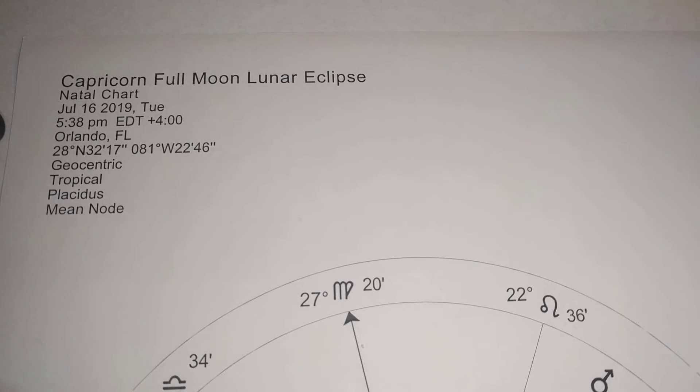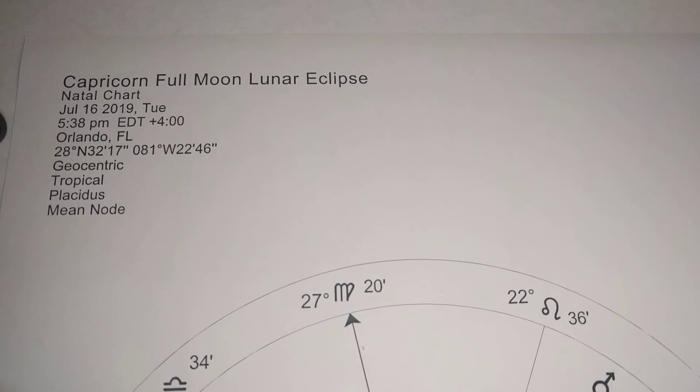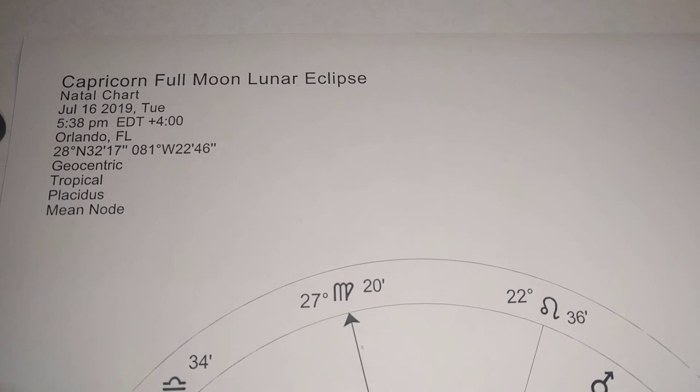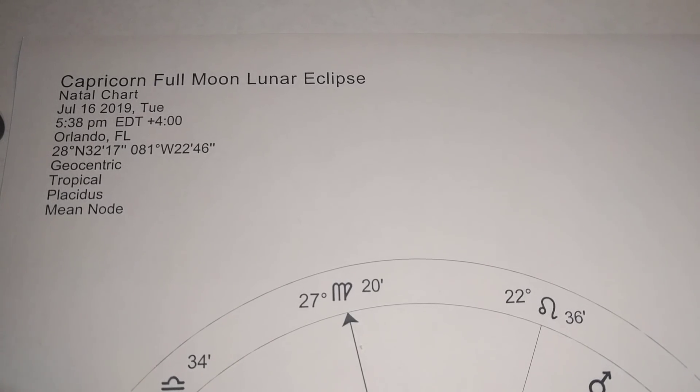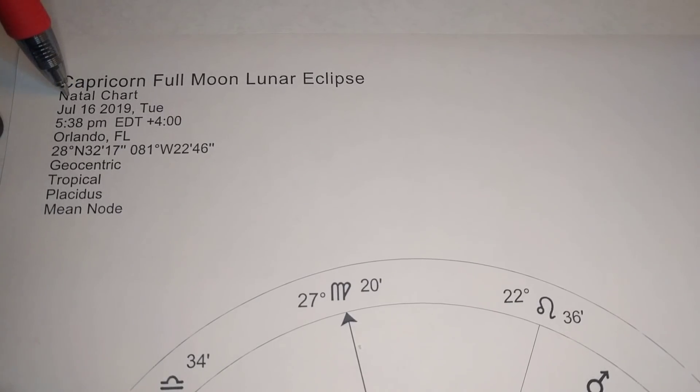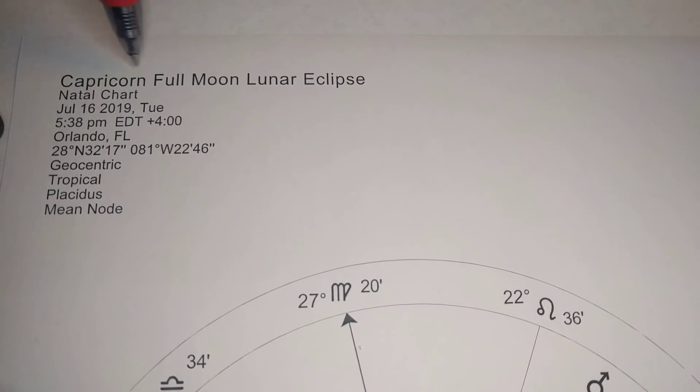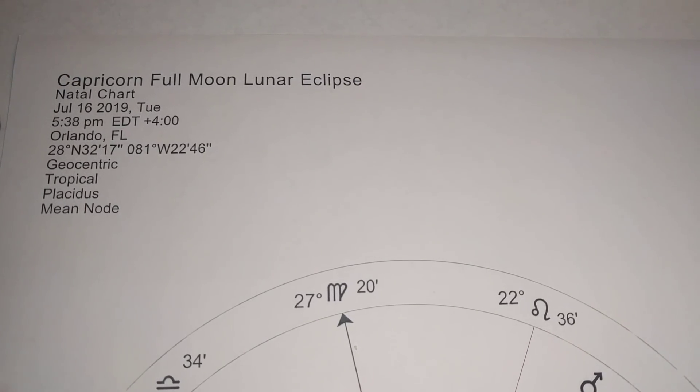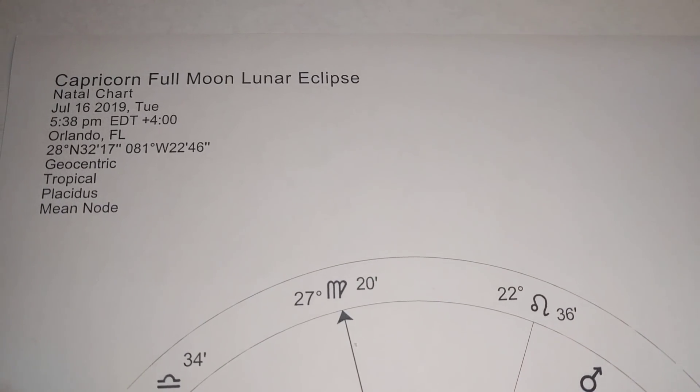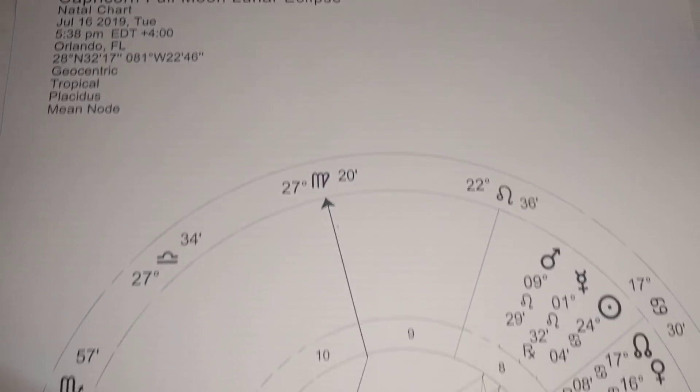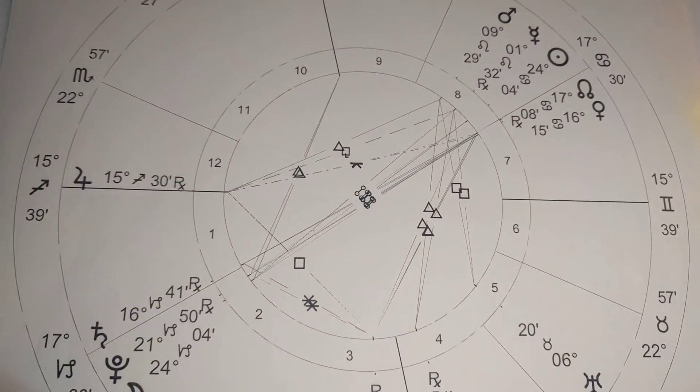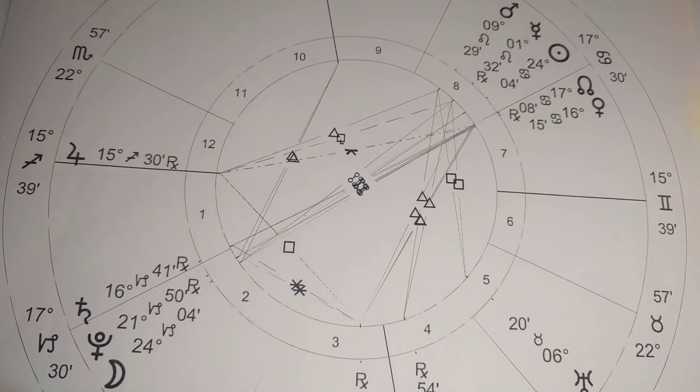Hi everybody, this is Molly McCord. Welcome to my latest video where we're going to take a look at the Capricorn full moon lunar eclipse coming up July 16th, 2019, 5:38 PM Eastern Daylight Savings Time. Make sure you adjust this time for your time zone and location on the planet. We have quite an intense lunar eclipse here that we're going to dive into.